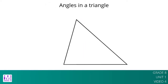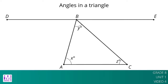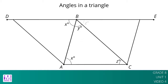Using parallel lines and rotations, we can understand why the angles in a triangle always add up to 180 degrees. Here is triangle ABC. Line DE is parallel to AC and contains point B. A 180-degree rotation of angle ABC around the midpoint of AB interchanges angles A and DBA, so they have the same measure. In the picture, these angles are marked as X degrees.